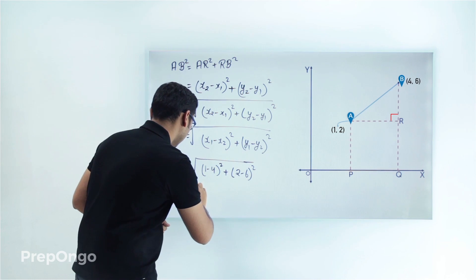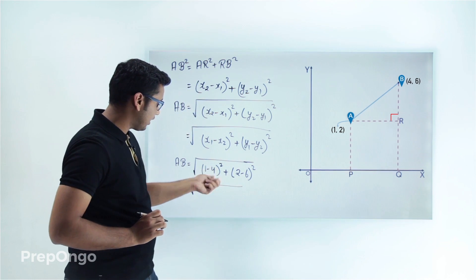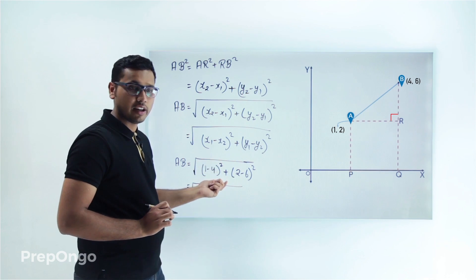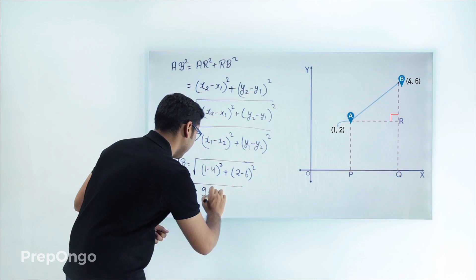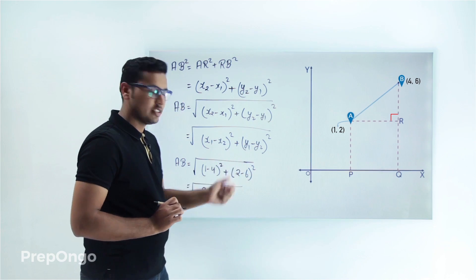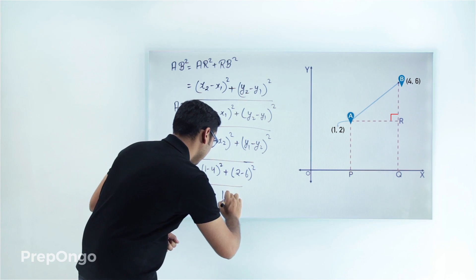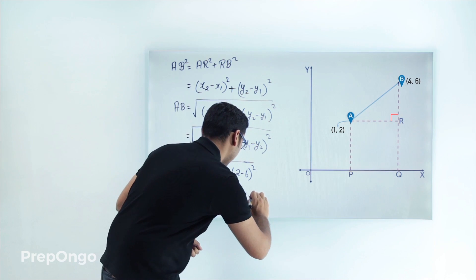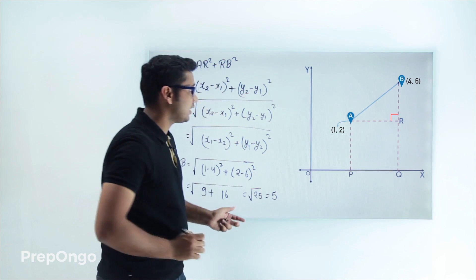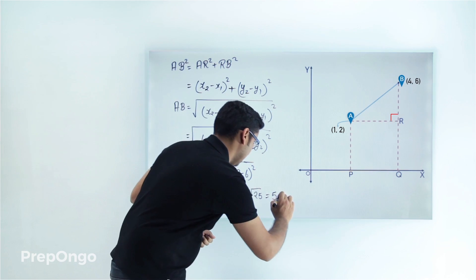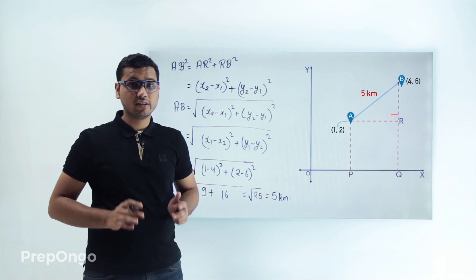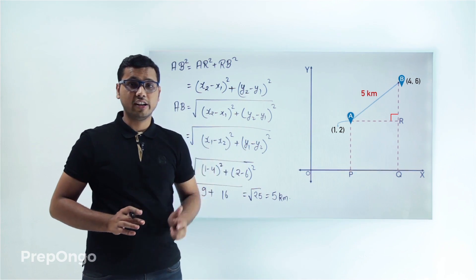Now let's solve this. 1 minus 4 gives minus 3, and minus 3 squared is 9. Then 2 minus 6 gives minus 4, and minus 4 squared is 16. Adding these: 16 plus 9 is 25, and the square root of 25 is 5. So we can say that the distance between A and B is 5 kilometers. This is how we calculate the distance between any two points if their coordinates are given to us.